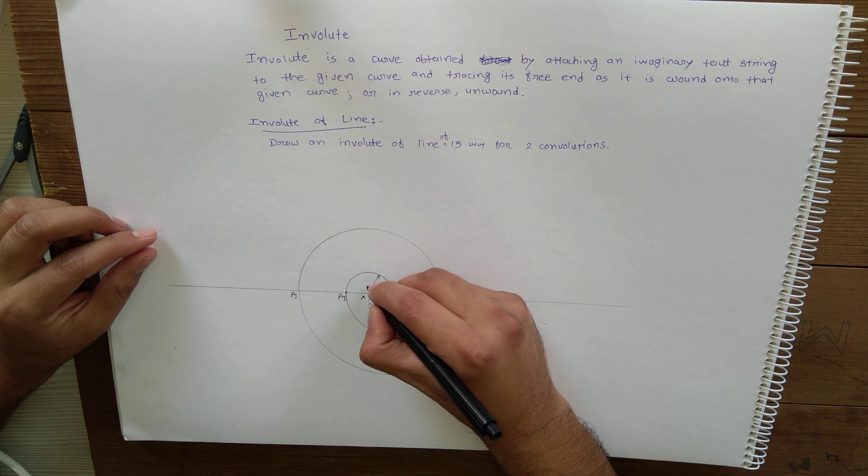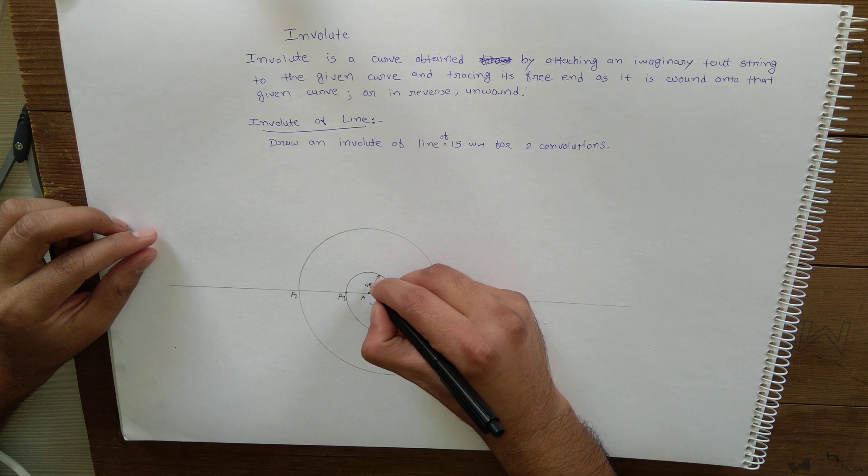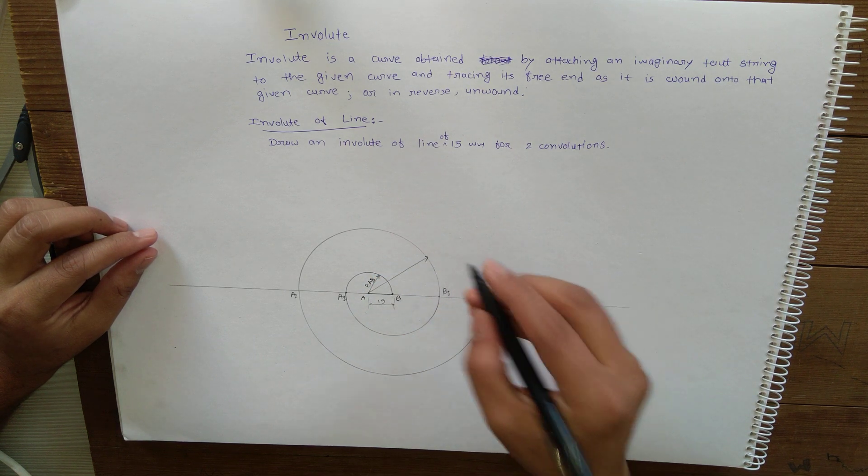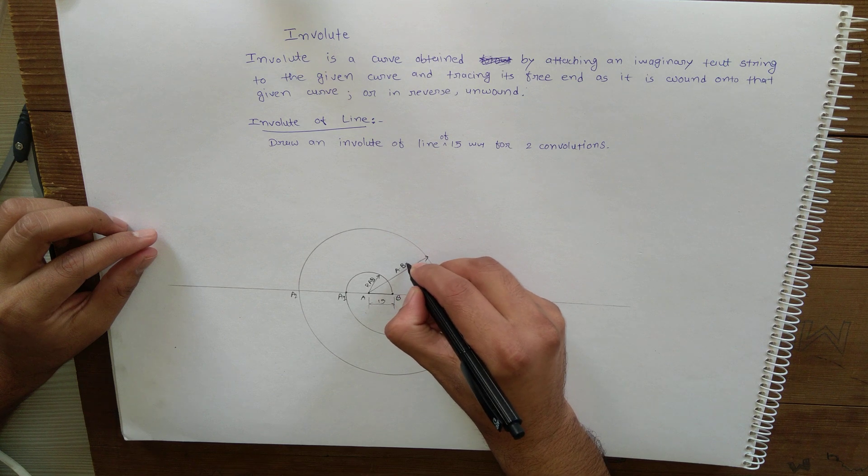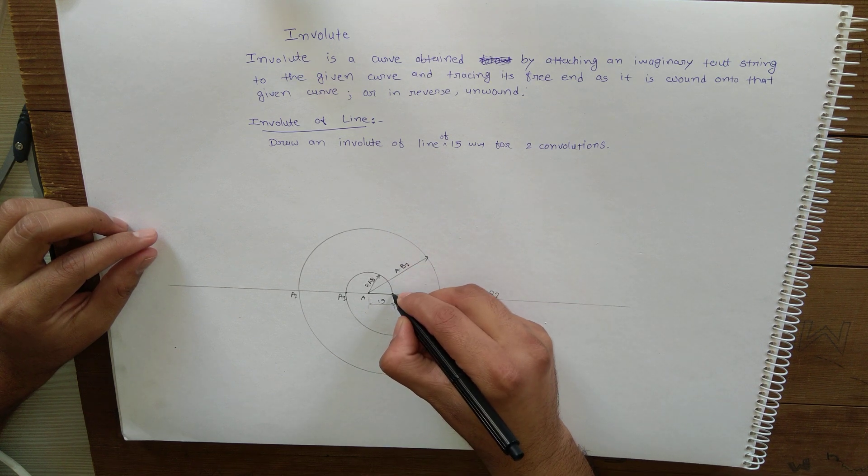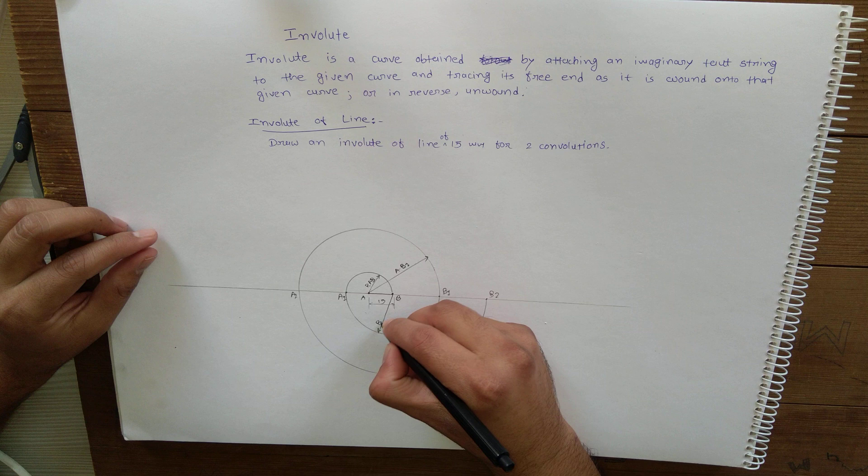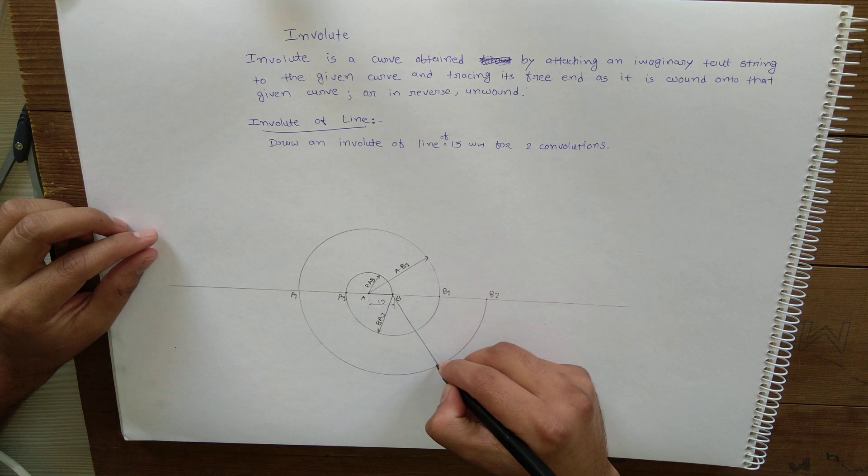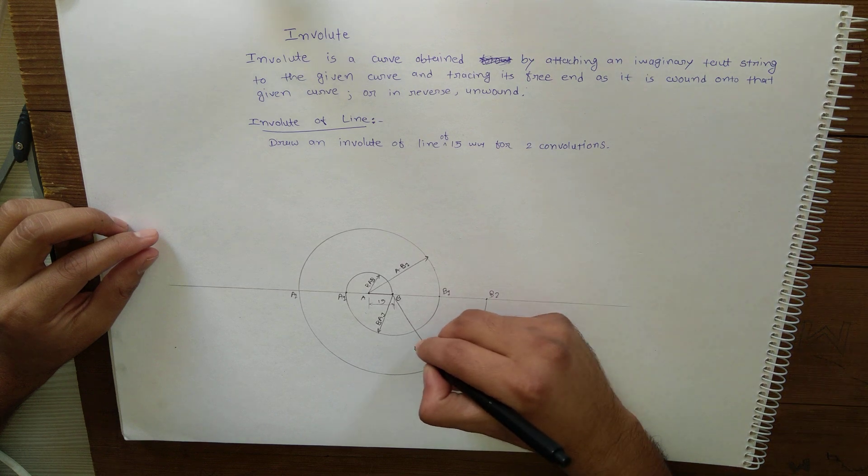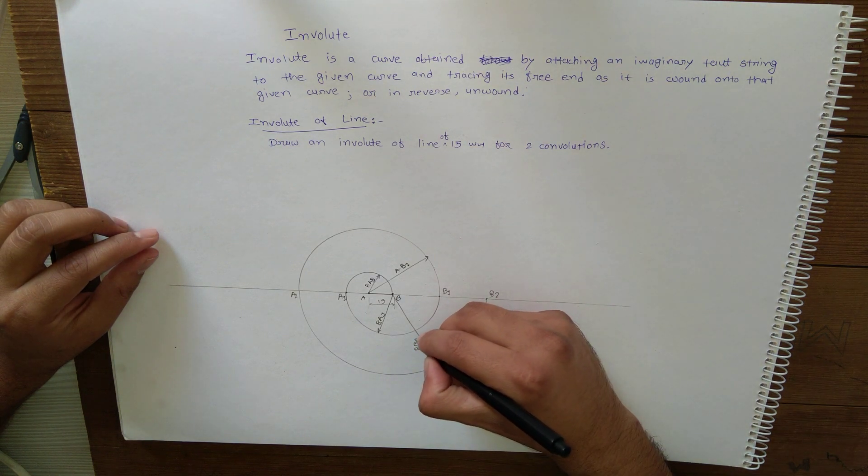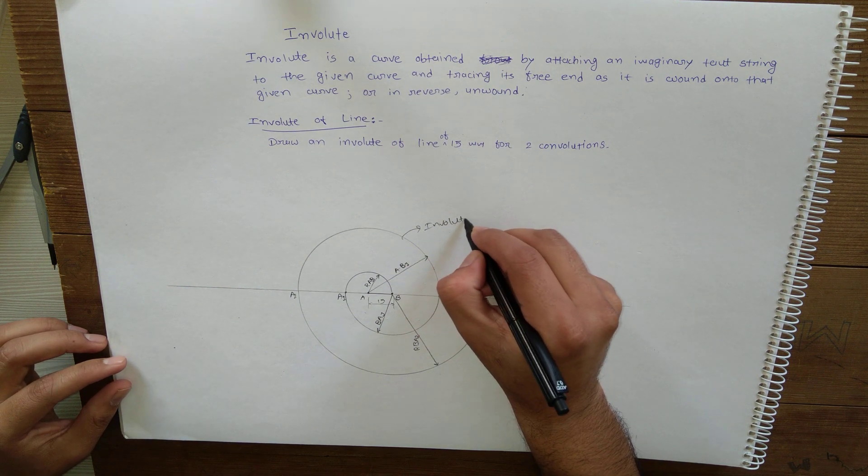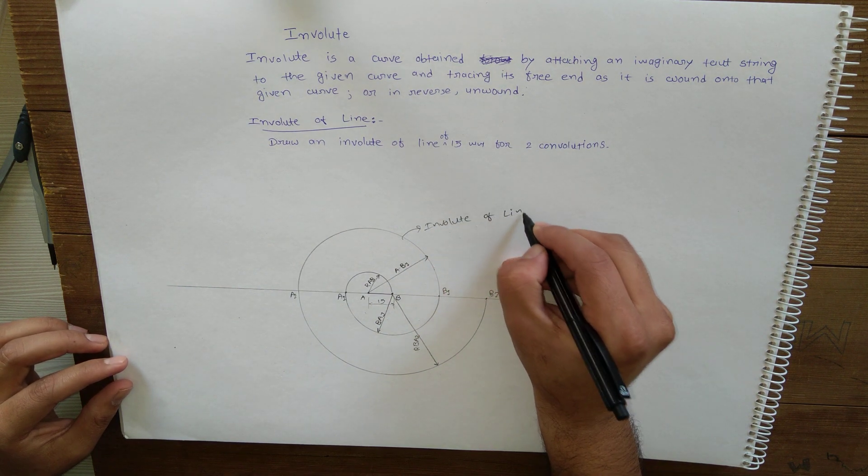...dimensions of the arc radius: AB, this is radius B1, and this is radius B2. It is the required involute of line. Thank you.